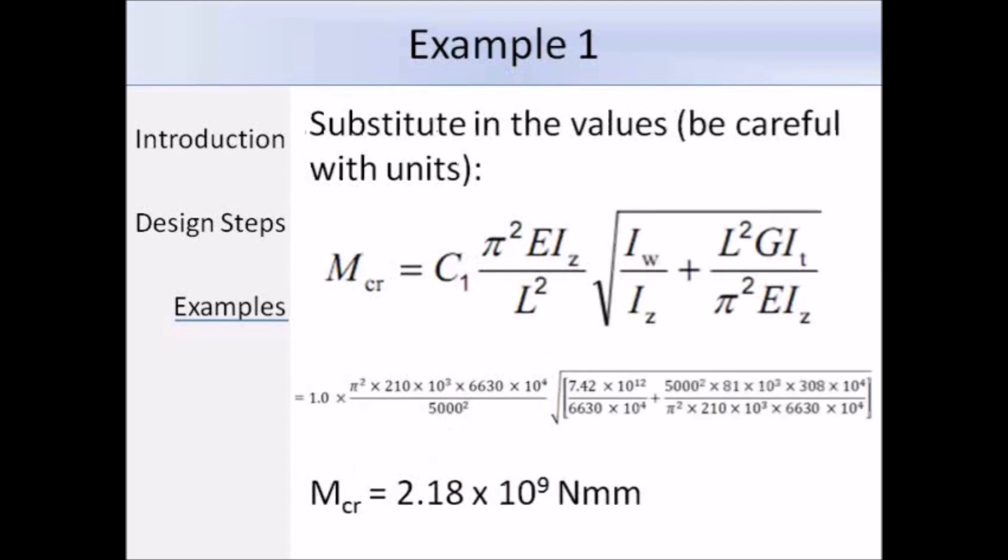So now we can just substitute in the values and work out the critical moment. So taking care of the units, we get an answer of 2.18 by 10 to the power of 9 Nmm² or 2180 kNm. So that's MCR, and next we need to calculate lambda bar LT.